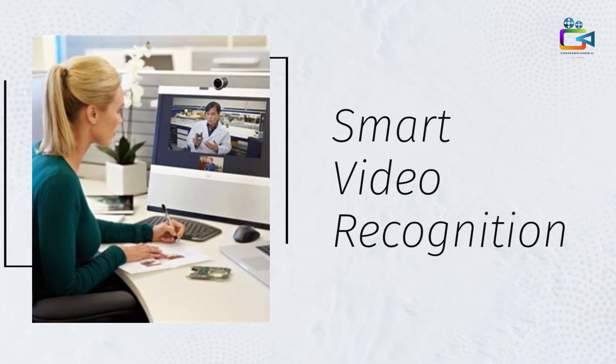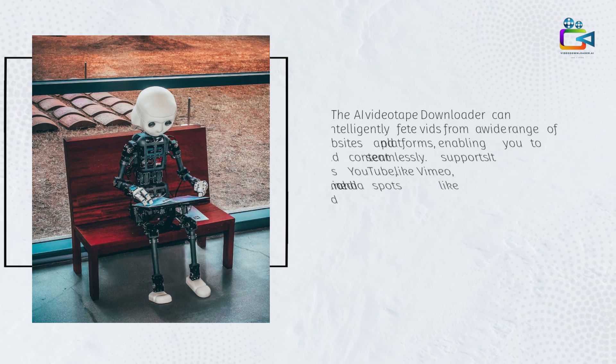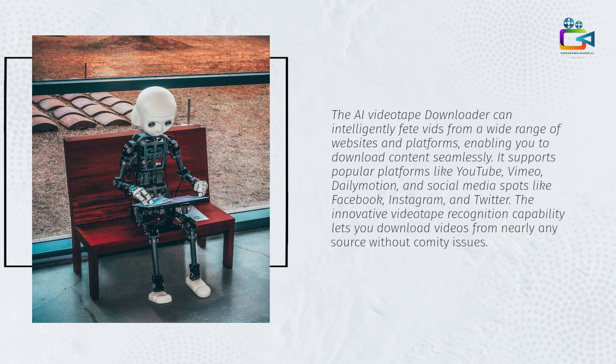Smart Video Recognition: The AI Video Downloader can intelligently detect videos from a wide range of websites and platforms, enabling you to download content seamlessly. It supports popular platforms like YouTube, Vimeo, Dailymotion, and social media sites like Facebook, Instagram, and Twitter. The innovative video recognition capability lets you download videos from nearly any source without compatibility issues.